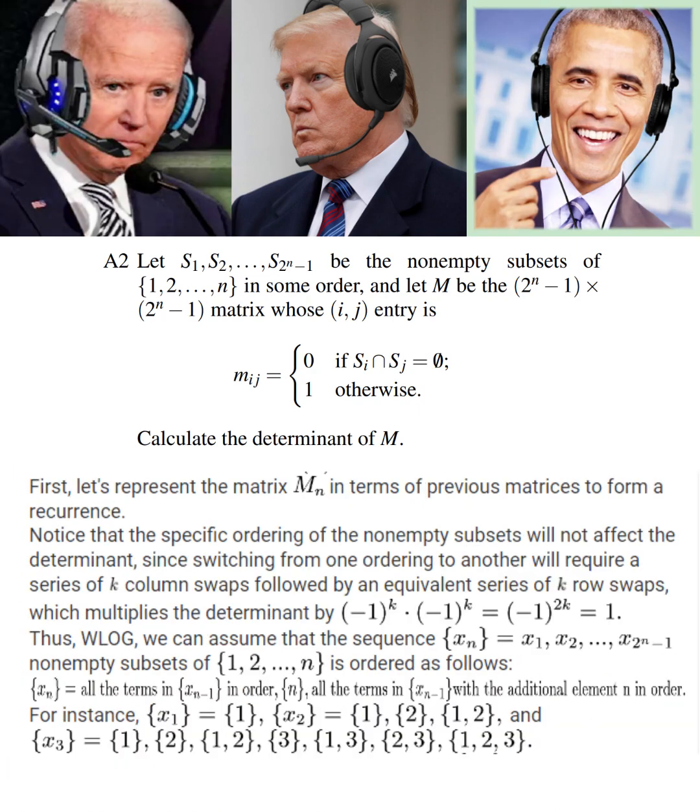Continuing on Biden's point, without loss of generality, we can assume that the sequence X sub N of non-empty subsets of the first N positive integers is ordered in this fashion. All the terms of X sub N minus 1 are first listed in their order. After that comes the subset with the single element N. And finally, all the terms of X sub N minus 1 are listed in order again, except the element N is appended to each term this time. If you're confused, here's what the sequences would look like for small N.